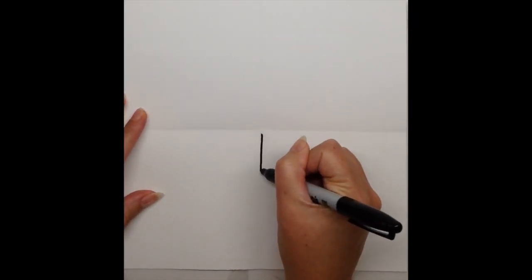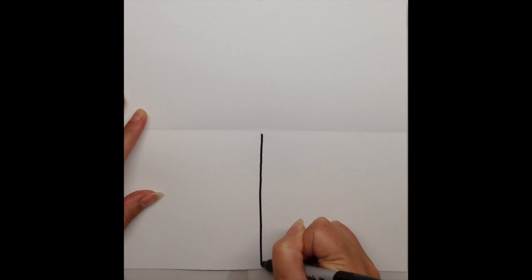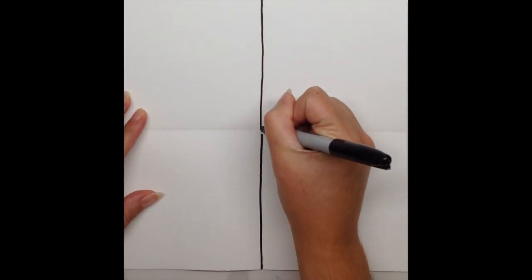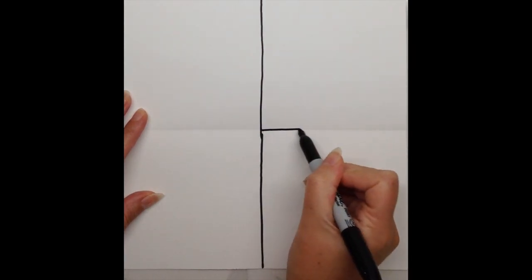Use your pencil and trace over those fold lines. It's going to look like a big giant plus sign across your paper or like a window.